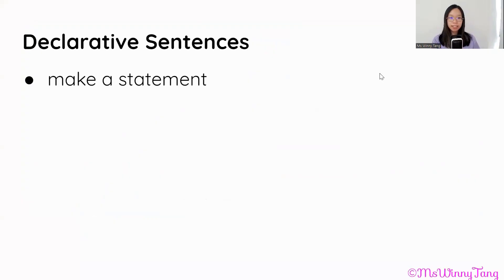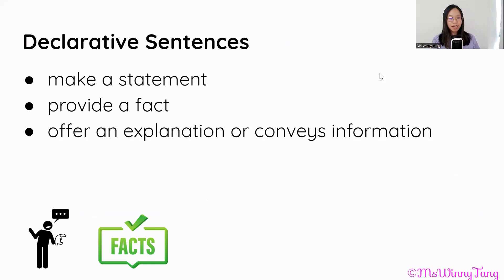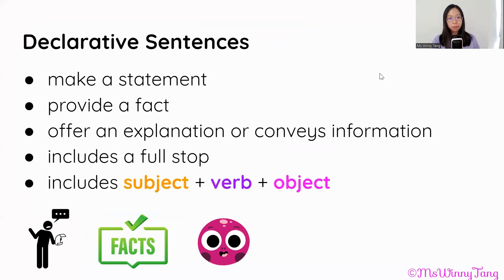A declarative sentence makes a statement. It provides a fact. It offers an explanation or conveys information. It includes a full stop. And it includes a subject, verb and object.